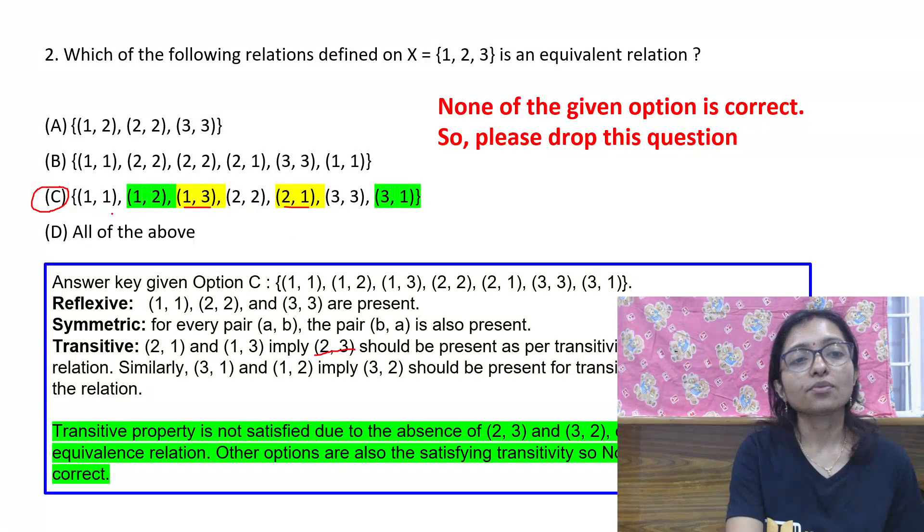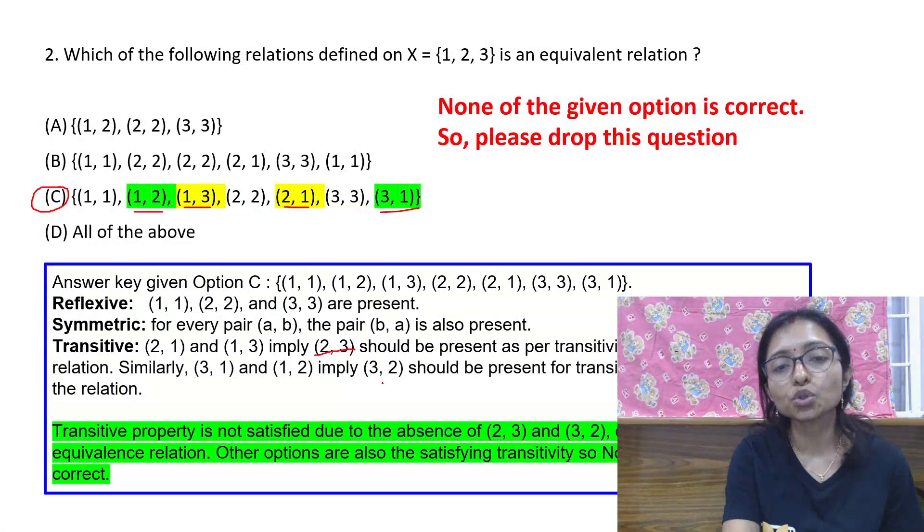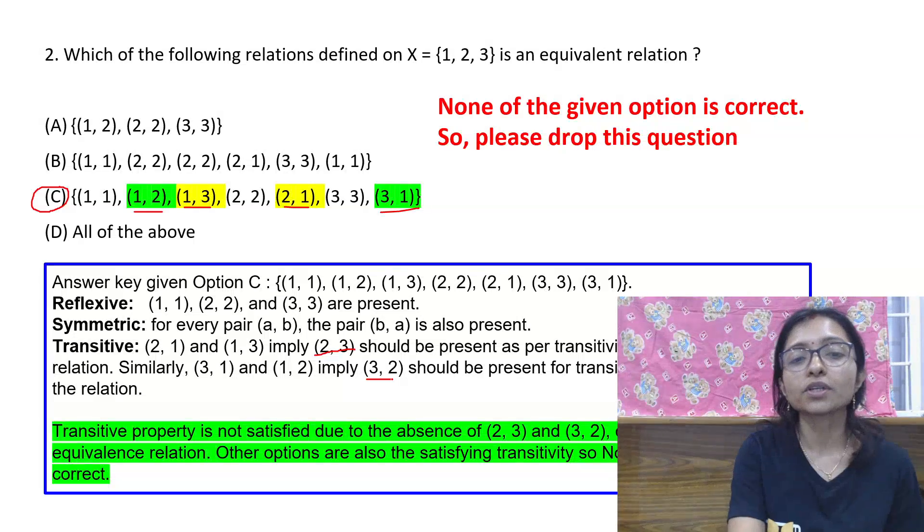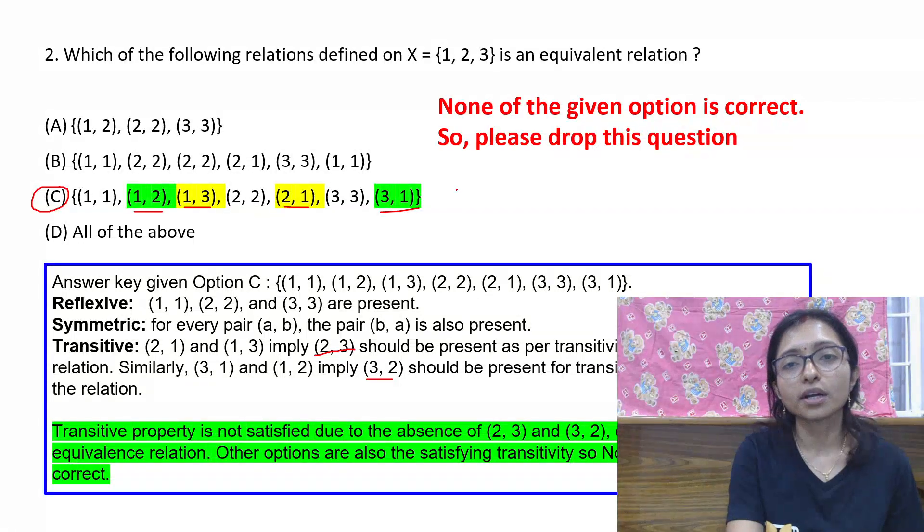And when we are going with (3,1) and (1,2), then (3,2) should be present. So (3,2) is also not there, so it is not satisfying transitivity. So anyhow, this is not an equivalence relation.